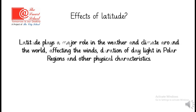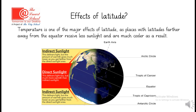Latitude plays a major role in the weather and climate around the world, affecting the winds, duration of the daylight in polar regions and other physical characteristics. Temperature is one of the major effects of latitude, as places with latitudes farther away from the Equator receive less sunlight and are much cooler as a result. You can see in this image these are the lines of latitude.